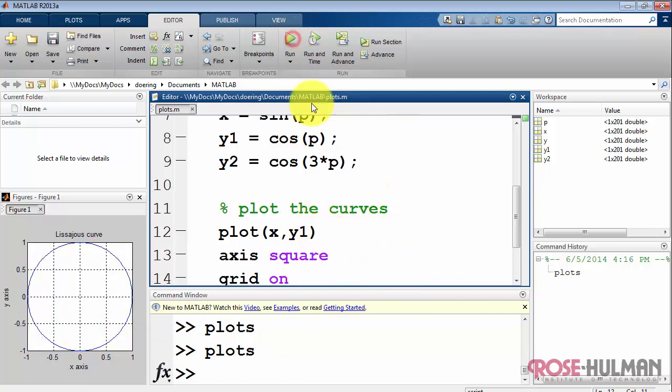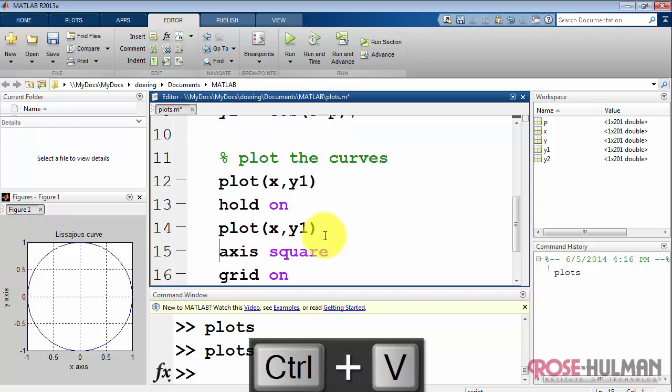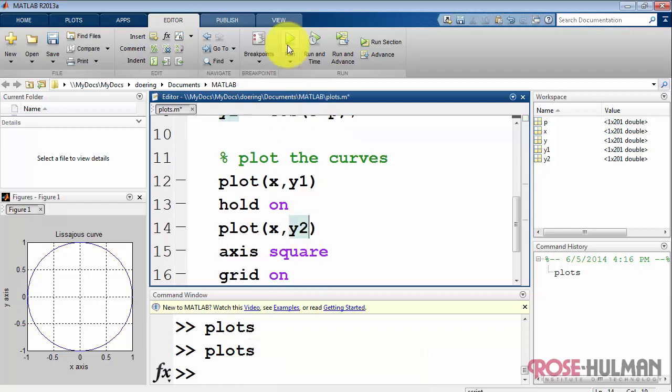Start by issuing the plot command and then issue the hold command where you say hold on. Now any subsequent plots automatically over plot without disturbing the original plot.